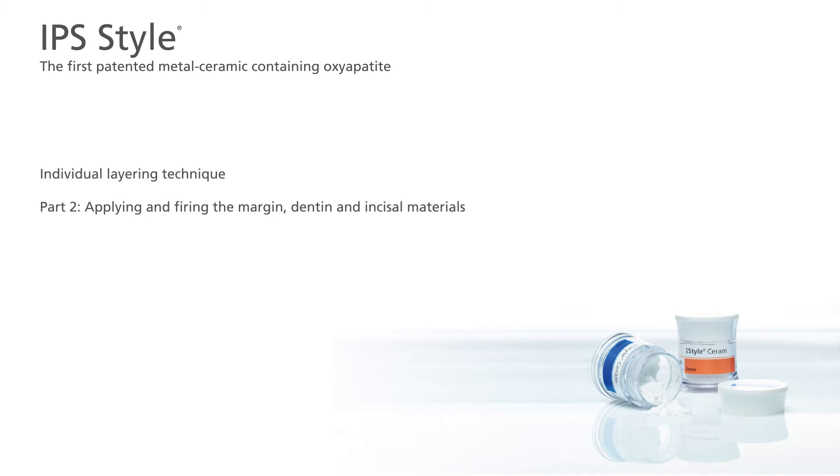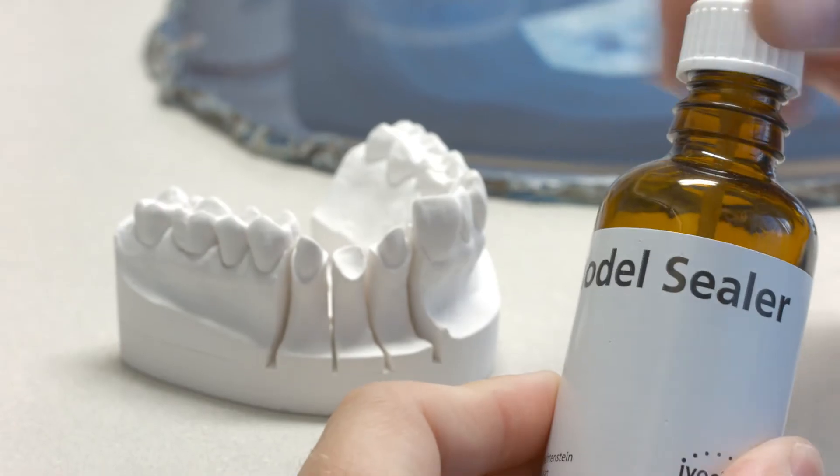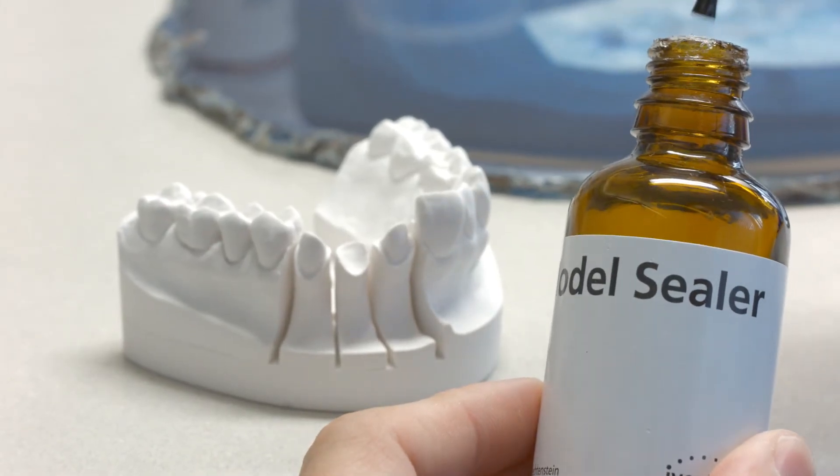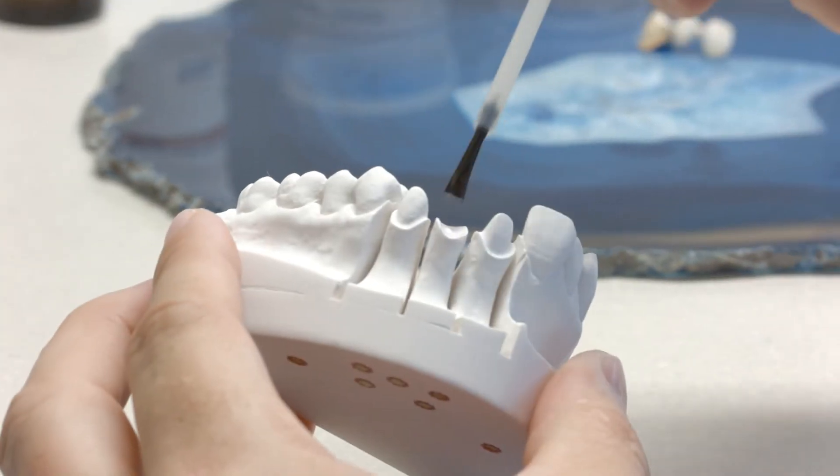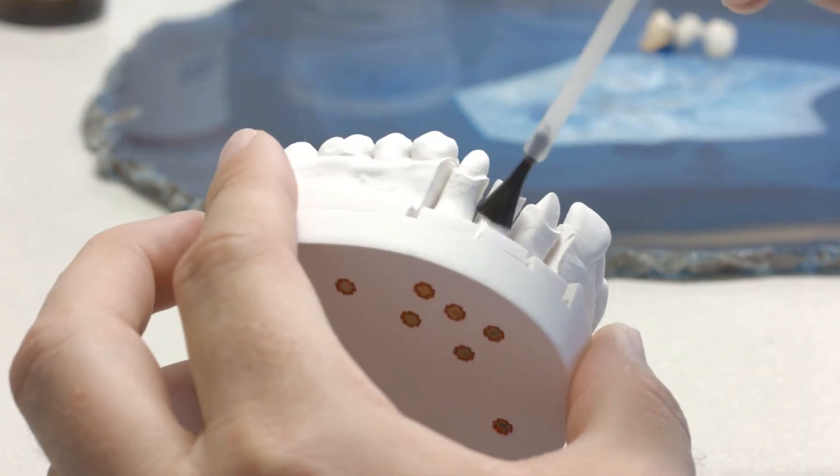Part 2. Applying and firing the margin, dentin and incisal materials. Seal the stone dies and the adjacent model areas, as well as neighboring teeth and the contact areas of Pontex with IPS model sealer.